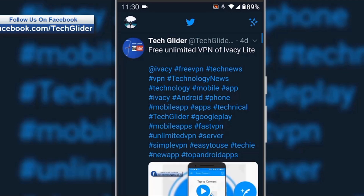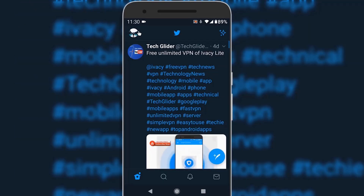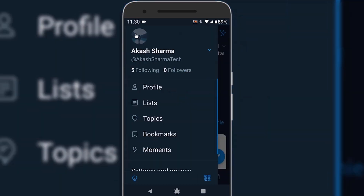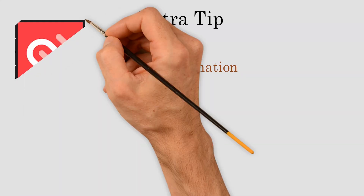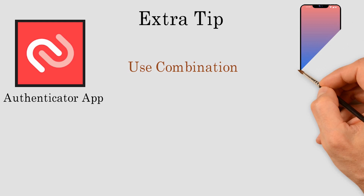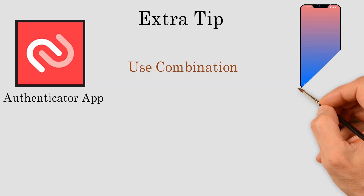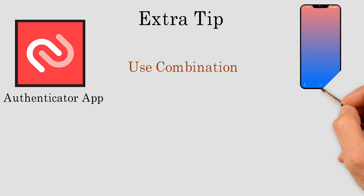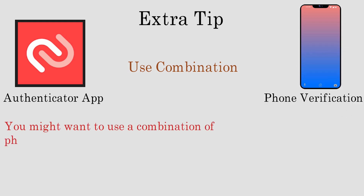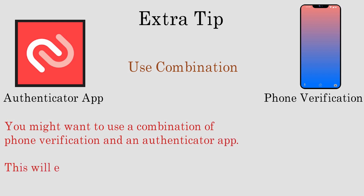You only need to enter the code when logging in from a new device. You might want to use a combination of phone verification and an authenticator app. This will ensure that you can access your Twitter account through the authenticator app if there is no mobile network in the area.